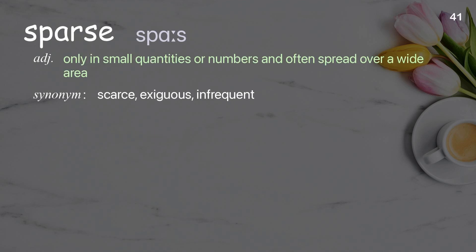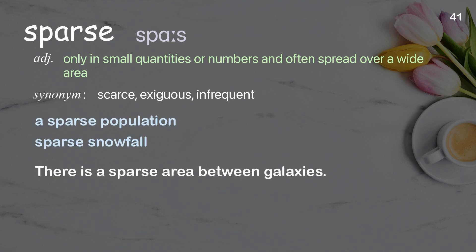Sparse: only in small quantities or numbers, and often spread over a wide area. Examples: a sparse population, sparse snowfall. There is a sparse area between galaxies.